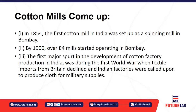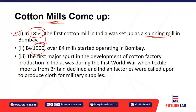Now let's look at cotton mills. The first cotton mill set up in India was in 1854 — it was established as a spinning mill in Bombay. From 1854 to 1900, 84 such mills started operating in Bombay alone. The setting up of these mills led to a spurt in the development of cotton factories producing threads, textiles, and clothes.